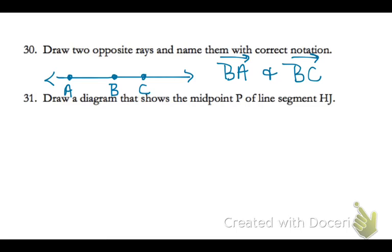Two opposite rays form a straight line. So ray BA and ray BC — they have to have the same endpoint. Remember that order matters when you're labeling a ray, so whatever your middle point is, they have to have the same endpoint there. So both of those have an endpoint of B and create a straight line.